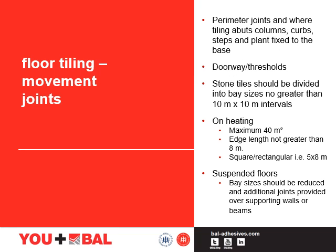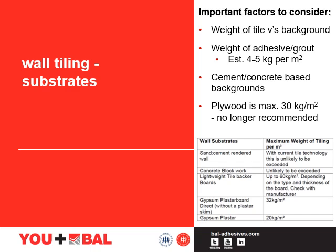Movement joints should always be specified in all tiling installations. There should be perimeter joints where the tiling abuts columns, kerbs, steps and plant fixed to the base, as well as doorway thresholds. Stone tiles should be divided into bay sizes no greater than 10 by 10 metres on non-heated screeds. On heated screeds we should have a maximum of 40 square metres with edge length no greater than 8 metres — for example a square or rectangular installation of 5 by 8 metres. Suspended floors means that the bay size should be reduced and additional joints provided over supporting walls or beams. When using natural stone as a wall finish it is important to consider the weight of the tile versus the background — a 10mm thick natural stone is equivalent to 30 kg per square metre.